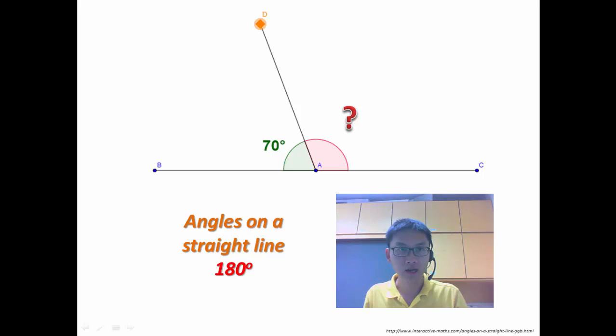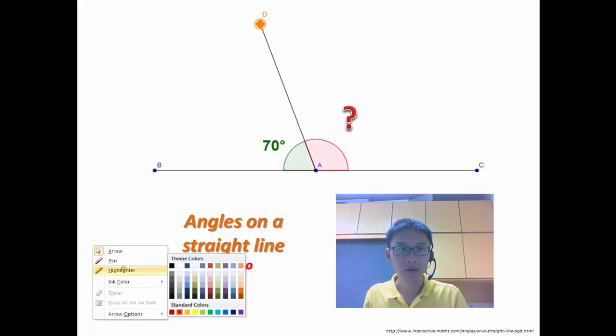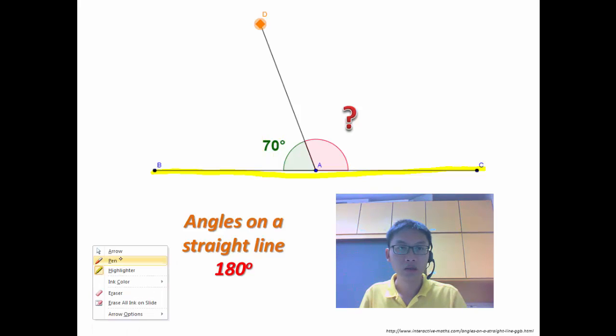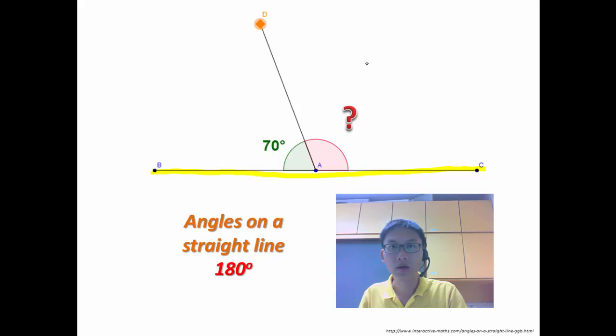Because the angle on the straight line here, this straight line BAC, if this is a straight line, then the angle here is 180 degrees. So if the angle here is 180 degrees, and this is 70, all I need to do is to take 180 minus 70 degrees.